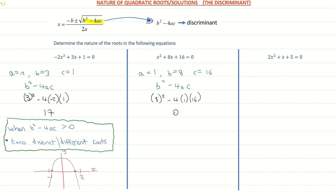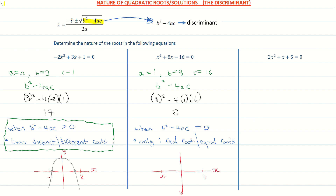So what does that tell us? When our discriminant is equal to 0, it basically means we only have one real root, or equal roots. In the first example we had it greater than 0, meaning there were two distinct roots. When the solution equals 0, we just have one real root — or in other words, equal roots; it's touching the same point. On our coordinate graph, x squared plus 8x plus 16 is a positive parabola, so it comes down and touches the graph at exactly one point. It tells us the nature of the roots: just one real equal root.